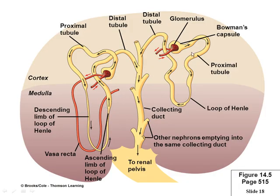The cortical nephrons are primarily in the cortex; the juxtamedullary stretch deep down into the medulla. They do more concentrating — pulling a lot of water out of your urine. If you're a desert animal, you'd expect juxtamedullary nephrons to be longer, giving more time to absorb more water. A professor once described a kangaroo rat in a lab — a desert animal — whose urine was so concentrated it formed perfectly round, syrup-thick little spheres on the floor instead of spreading out.